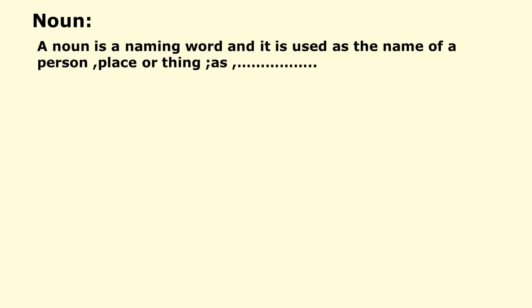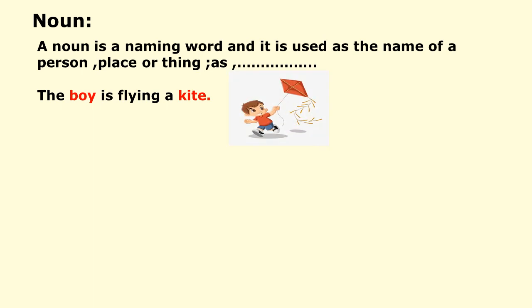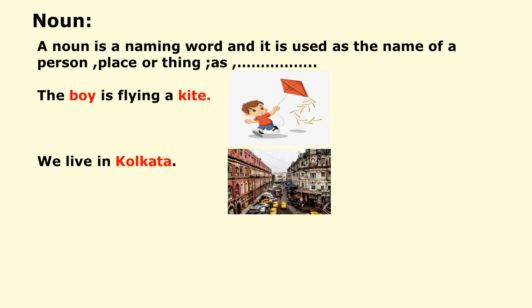Today I will discuss only noun and pronoun. A noun is a naming word and it is used as the name of a person, place, or thing. For example: 'The boy is flying a kite' — in this sentence there are two nouns: boy and kite. 'We live in Kolkata' — in this sentence the noun is Kolkata.